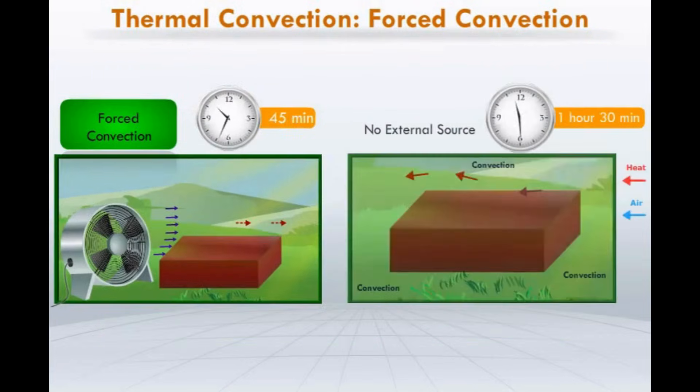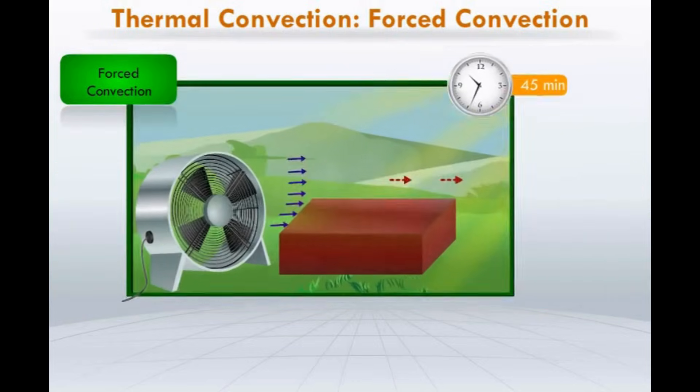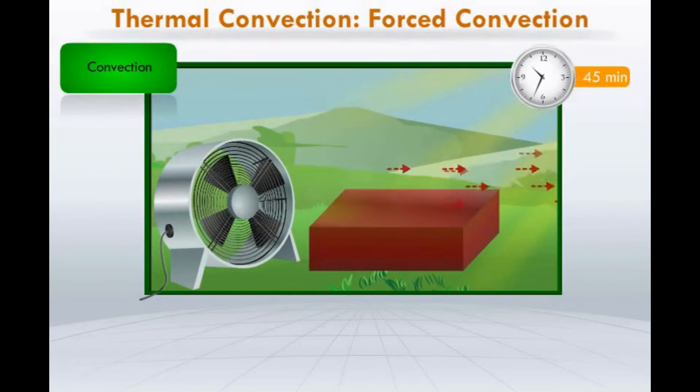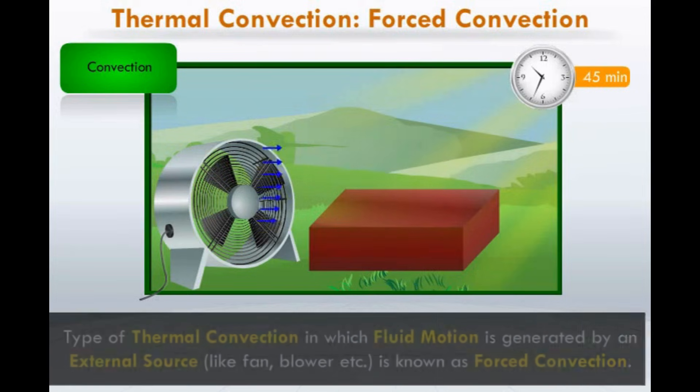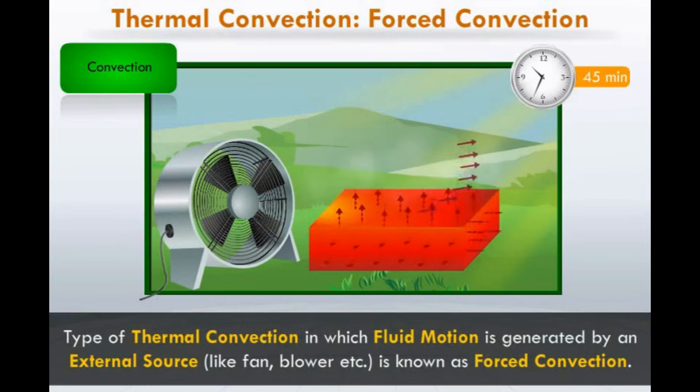As a result, this slab cools faster than the slab placed in open air without a cooler near it. Here, the external source, the blower, forces the convection heat transfer rate of the slab to increase. Such type of convection in which fluid motion is generated by an external source like a fan is known as forced convection.